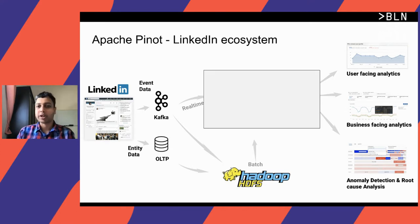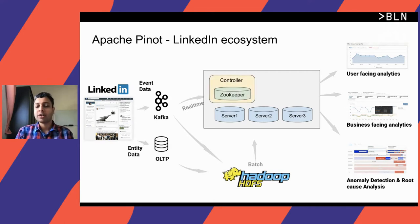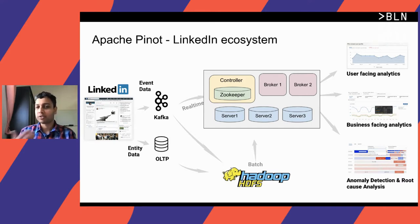Looking under the hood of Pinot, incoming data from the data source is organized in column format and spread across Pinot servers. You can add as many servers as you want and configure replication among them. The Pinot controller handles all cluster coordination functions such as membership, replication, and partitioning. The Pinot broker takes a user or application query and performs a distributed scatter-gather: it identifies which servers are responsible, sends the query to them, collects intermediate results, does a final aggregation, and returns it to the user.